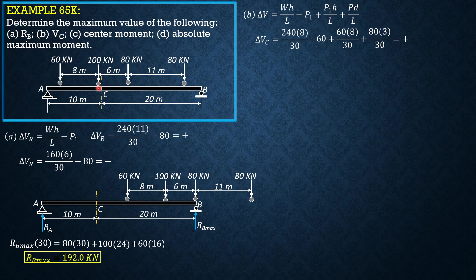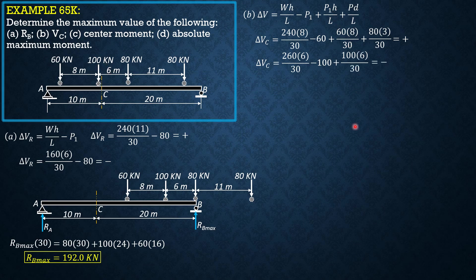Next, we move the 80 kN load over C. The 60 kN load will be off span, so W is 100 plus 80 plus 80, which is 260. H is 6, P1 is 100, and there is no incoming load. Delta V sub C is 260 times 6 over 30, minus 100, plus 100 times 6 over 30. This time it is negative, so the preceding position — the 100 kN load over C — satisfies the criterion for maximum shear at C.